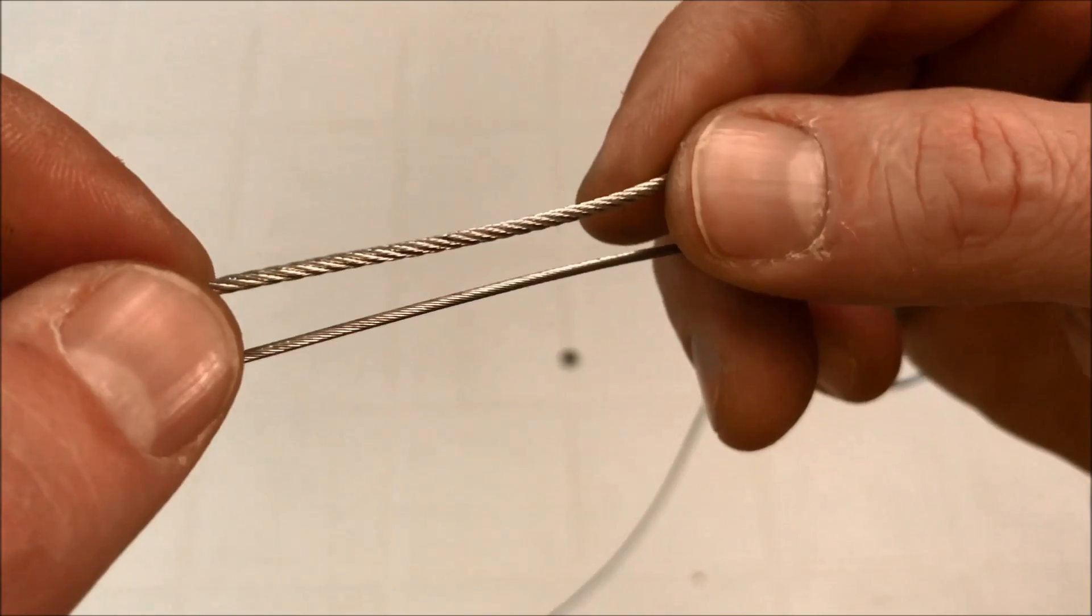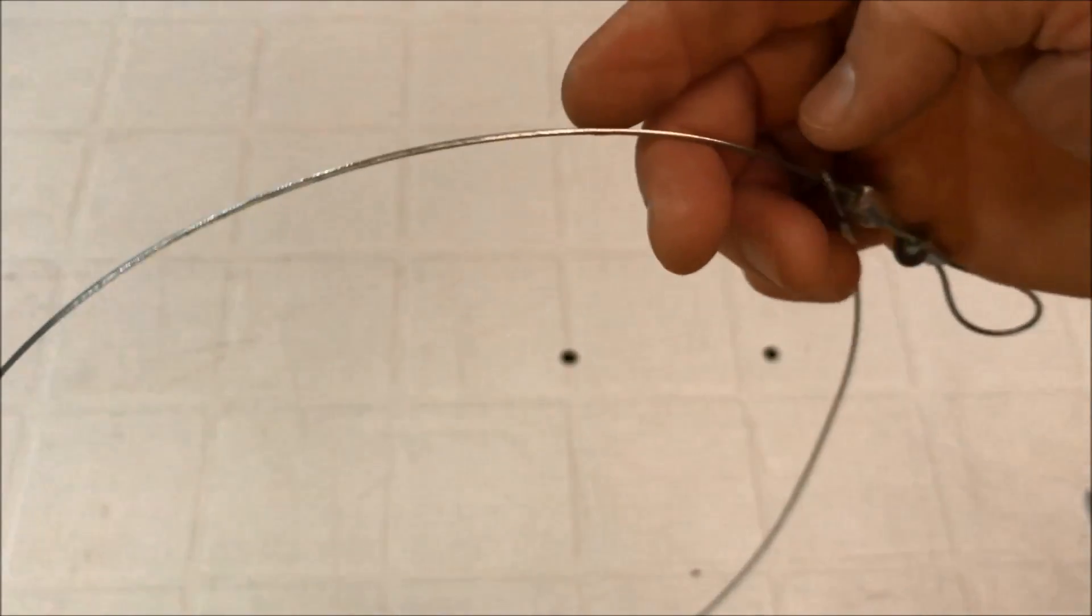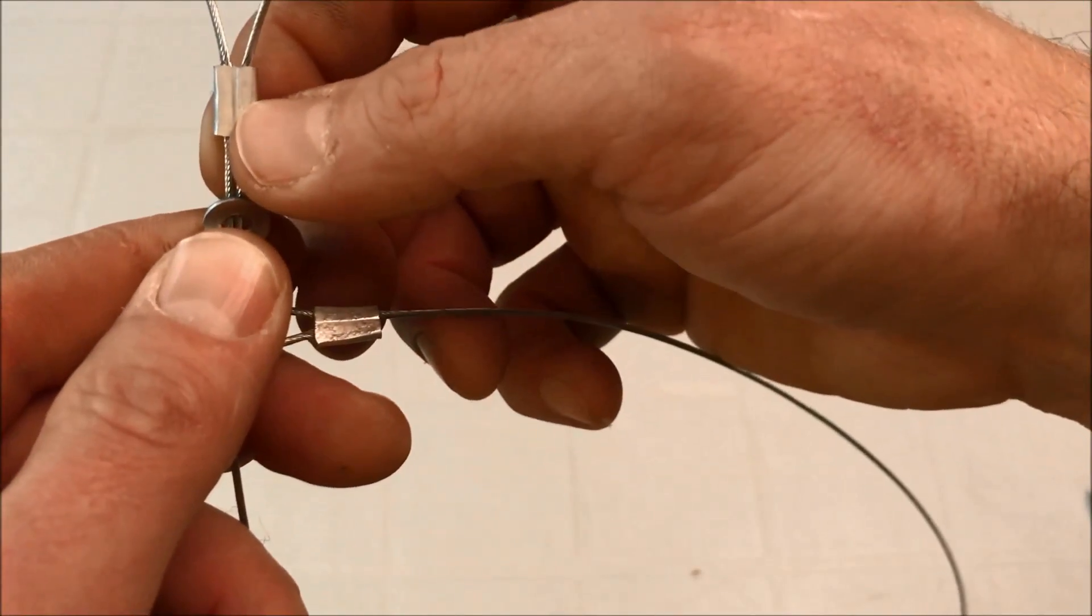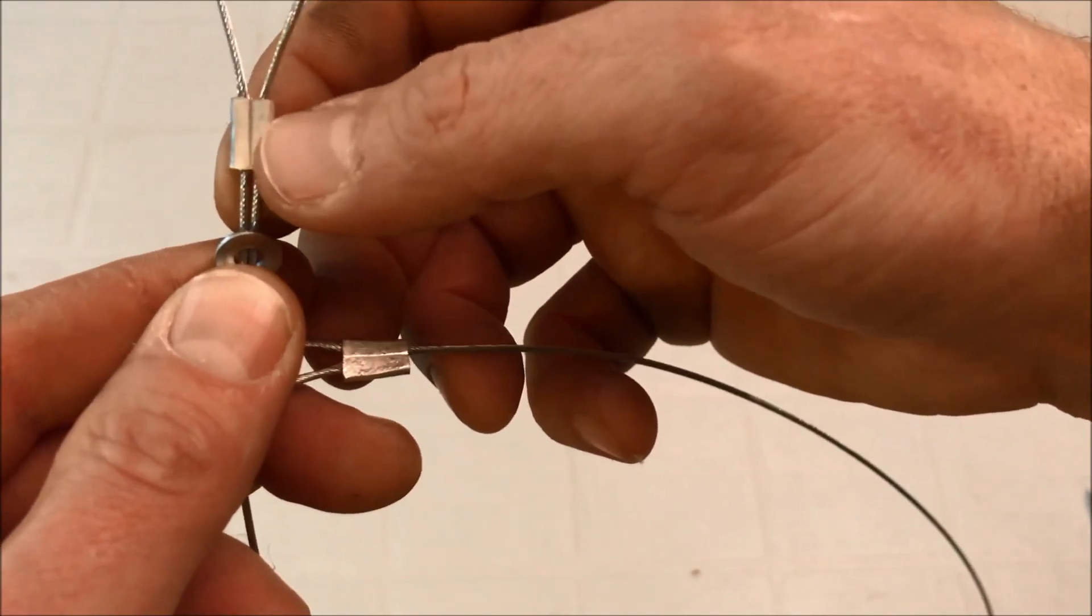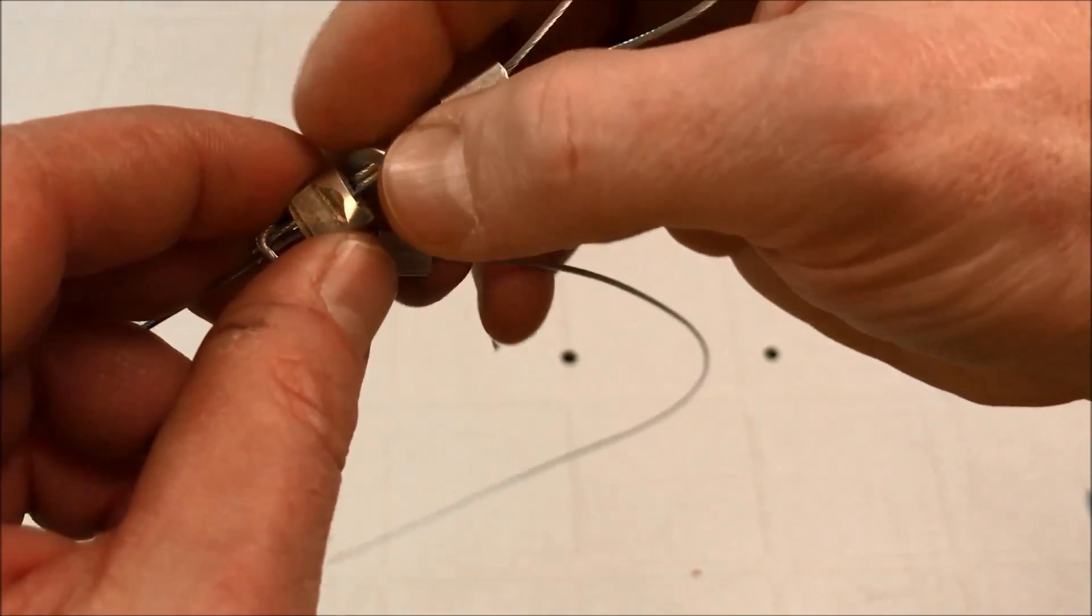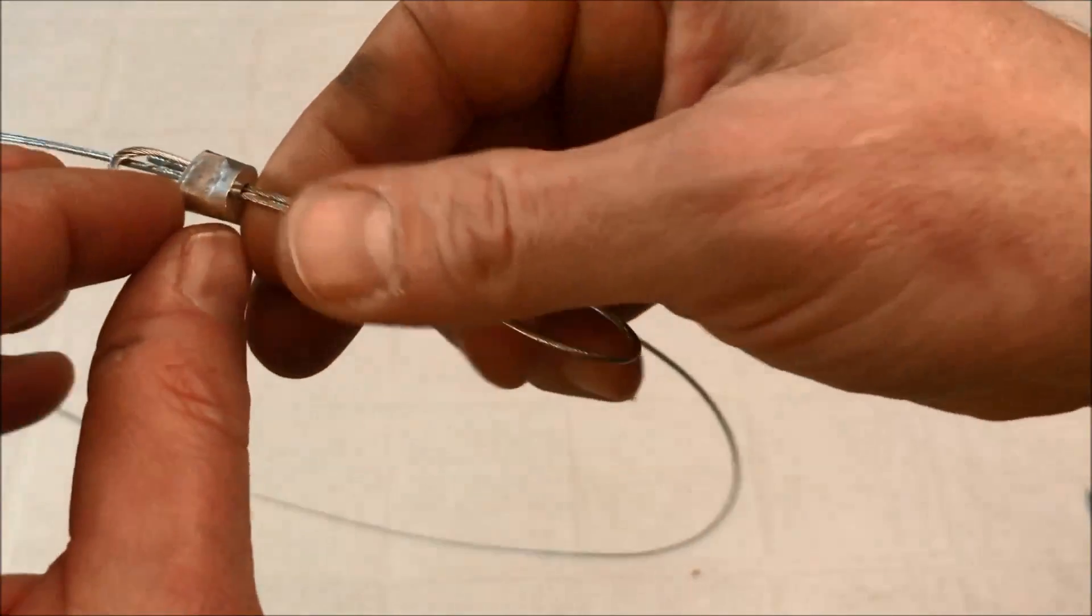And I'm using 3/64th double ferrules. There's two of them here. Number six washers and 1/16th single ferrules.